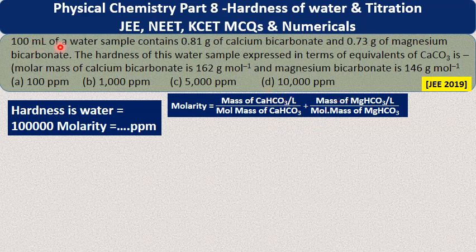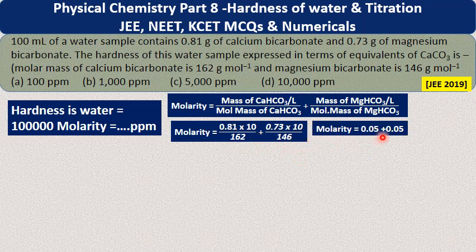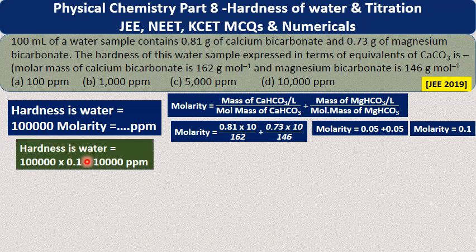Weight per litre is 10 times the given weight, since the data is for 100 ml. For calcium bicarbonate: 0.81 × 10 ÷ 162 = 0.05. For magnesium bicarbonate: 0.73 × 10 ÷ 146 = 0.05. Note: 162 = 2 × 81 and 146 = 2 × 73. Total molarity = 0.05 + 0.05 = 0.1 = 10⁻¹. Hardness = 10⁵ × 10⁻¹ = 10⁴ = 10,000 ppm.